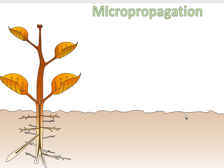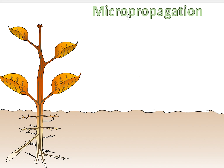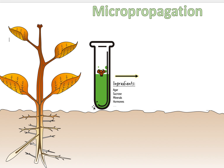Now let's get on to micro propagation. Let's break down the word: 'micro' means very small, 'propagation' means growth or duplication — so small duplication. Say we want to make another plant without a seed. What we do is take the apical meristem — because it has growth potential — and put it into a test tube, which is a glass container used in labs.